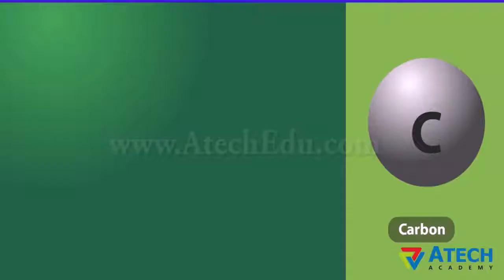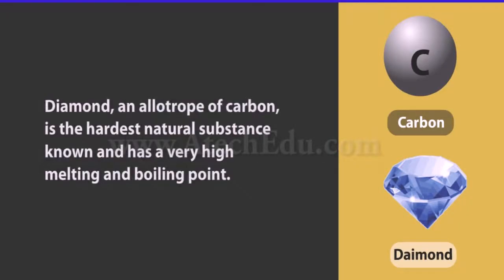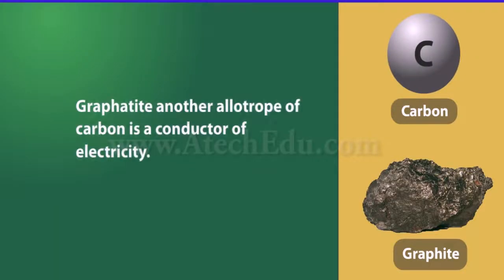Carbon is a non-metal that exists in different forms; each form is called an allotrope. Diamond, an allotrope of carbon, is the hardest natural substance known and has a very high melting and boiling point. Graphite, another allotrope of carbon, is a conductor of electricity.